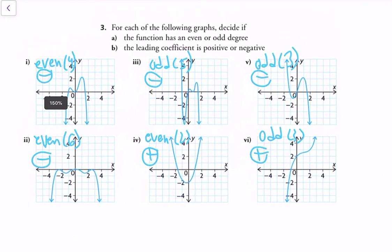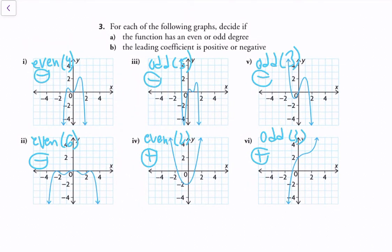For each graph, decide if the function has an even or odd degree and if the leading coefficient is positive or negative. Graph 1 is even, degree 4 — we know this because it has 3 turning points and is downward facing, giving a negative leading coefficient. Graph 2 is even, degree 6 — it has 5 turning points and both ends point downward, so it has a negative leading coefficient. Graph 5 has opposite end directions and 2 turning points, so it's degree 3 with a negative leading coefficient, since it starts in the second quadrant and ends in the fourth quadrant.